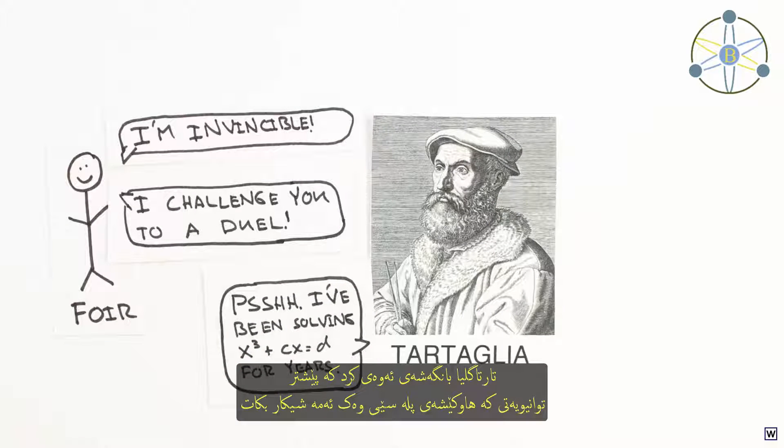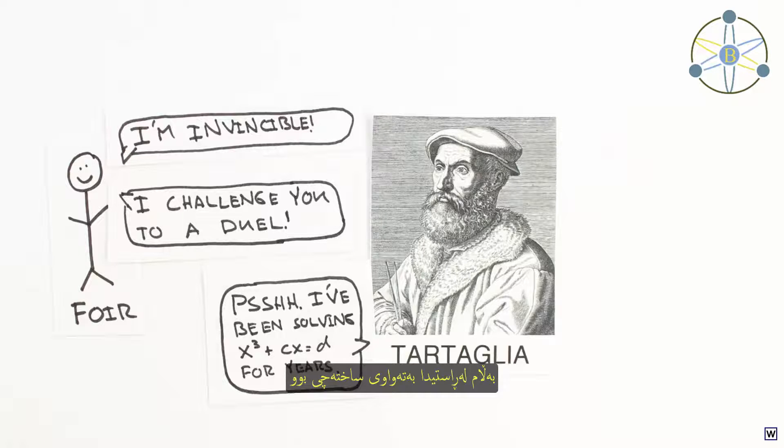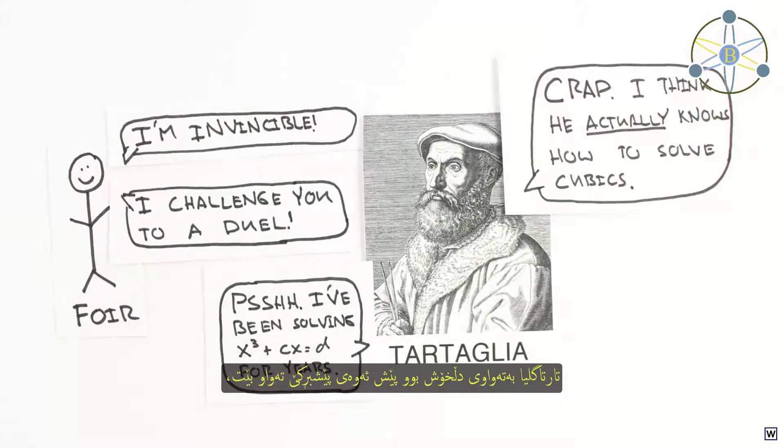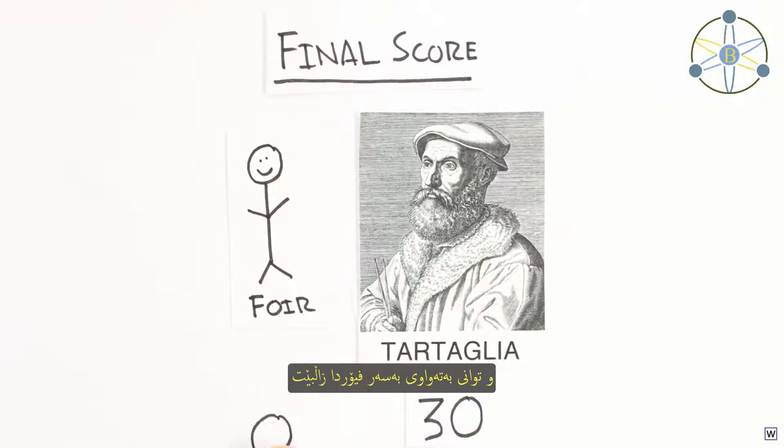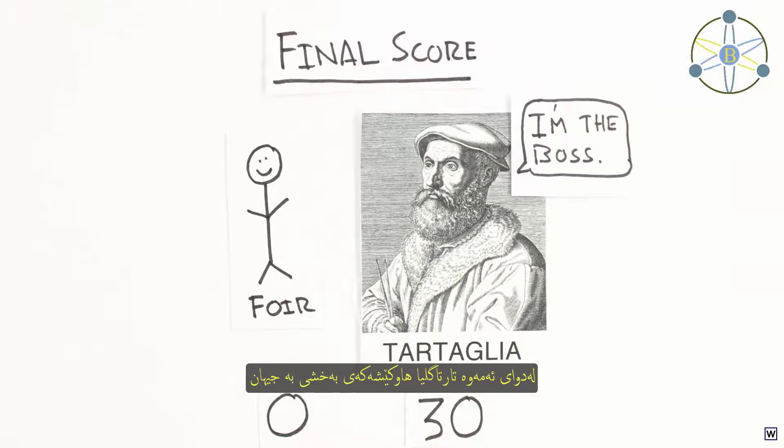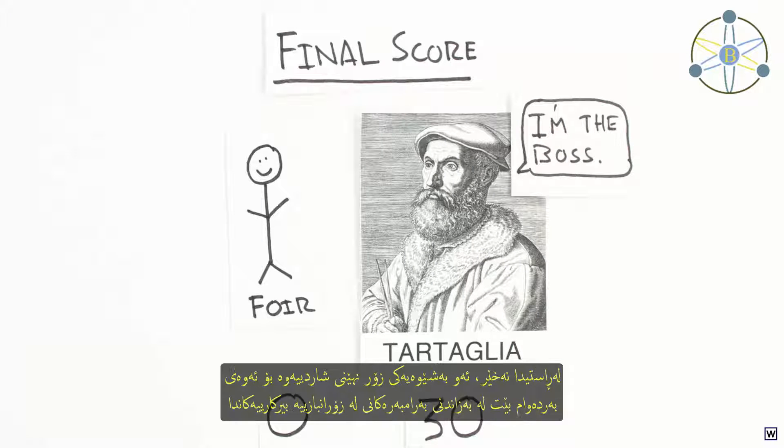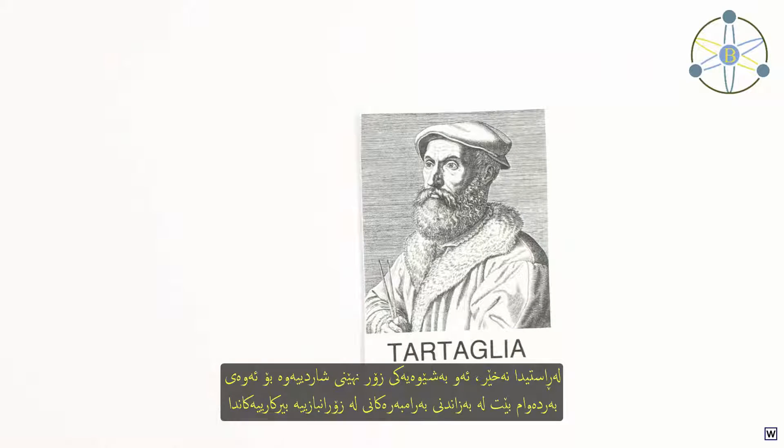Tartaglia had already claimed he could solve cubic equations like this, but had actually been totally faking it. Tartaglia freaked out before the math off and actually figured out how to solve these equations at the last minute and proceeded to completely dominate Four. Tartaglia then went on to share his formula with the world. Not really. He kept it super secret so he could keep kicking butt in math duels.